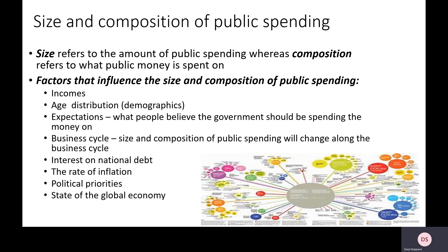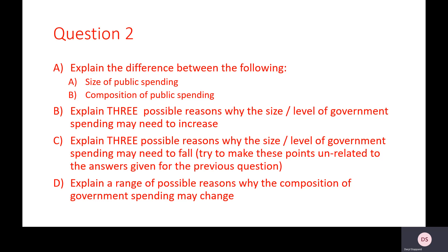Political priorities also influence spending. A government focused on tackling poverty and inequality may increase government spending, whereas a government promoting free-market economics may try to spend less and let market forces operate. Finally, the state of the global economy matters — if the global economy is struggling, or if poor countries are facing financial difficulties, there could be a growing need for our government to increase spending on financial aid and support for developing economies.